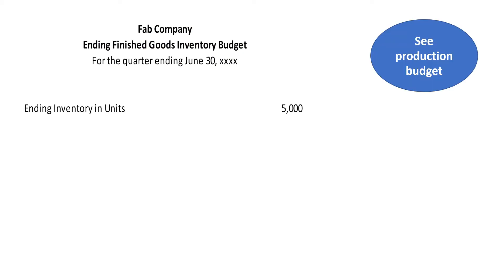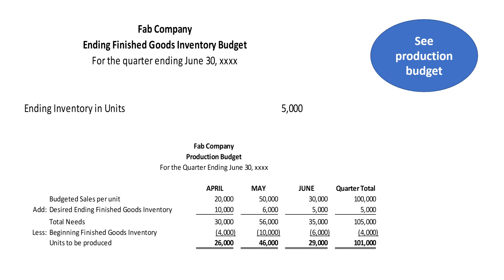Let us see the production budget. What information do we need in this budget? The Desired Ending Finished Goods Inventory of the Quarter — we have to copy that.